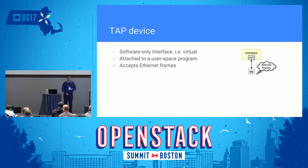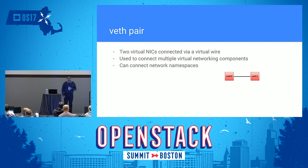A TAP device is a software-only interface — basically a virtual interface. You attach it to a user-space program and then start sending Ethernet frames to it. It's basically used by KVM such that you can have connectivity to your VMs. A VEth pair is a pair of two virtual NIC cards attached to each other using a virtual wire. They're usually used to connect multiple different network entities, such as OpenVSwitch, network namespaces, or Linux bridges.